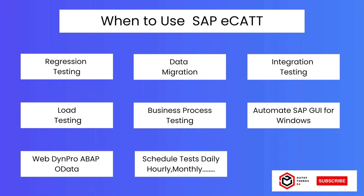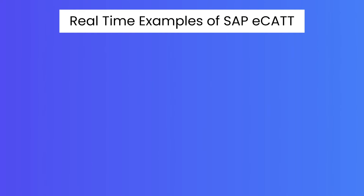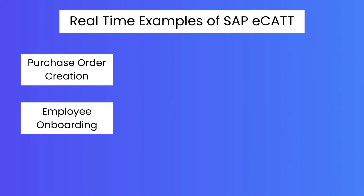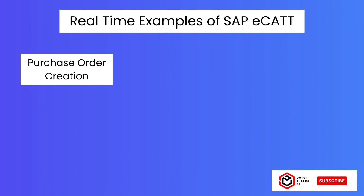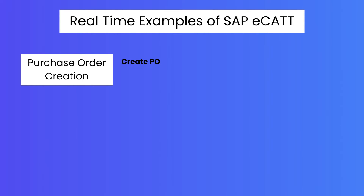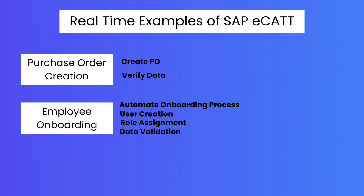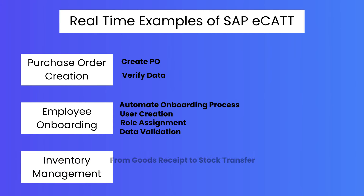You can also test OData services using eCATT, and you can schedule tests hourly, daily, or monthly based on business requirements. For example, you can use SAP eCATT for purchase order creation, employee onboarding, and inventory management. For purchase order creation, you execute the create purchase order transaction and then do verification. For employee onboarding, you automate user creation, role assignment, and data validation. For inventory management, from goods receipt to stock transfer, end-to-end automation can be performed.